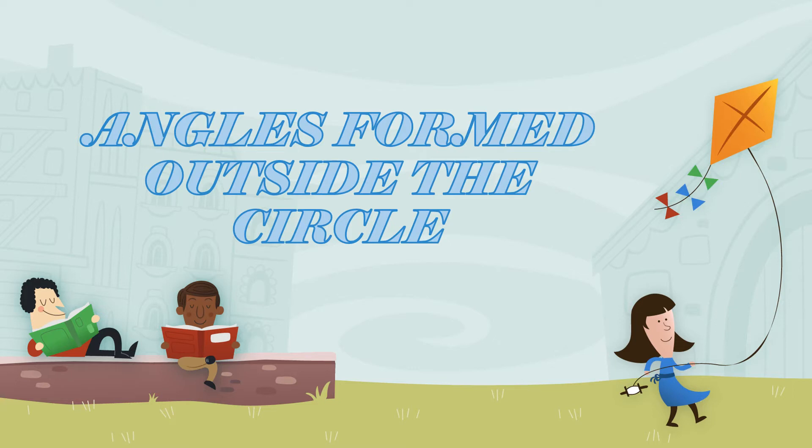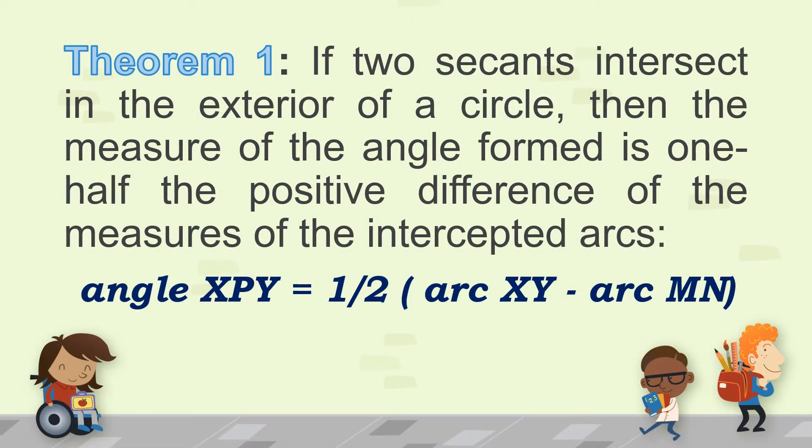Let's focus first on the angles formed outside the circle. Theorem number 1: if two secants intersect in the exterior of a circle, then the measure of the angle formed is one-half the positive difference of the measures of the intercepted arcs.